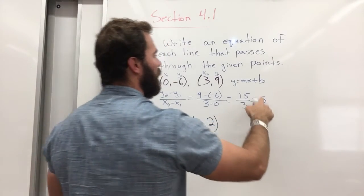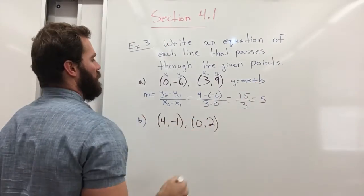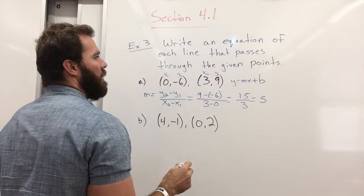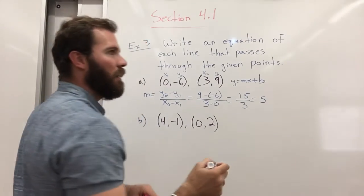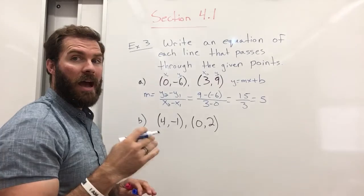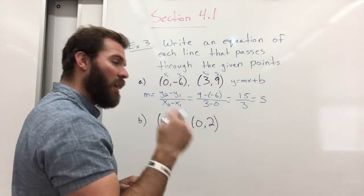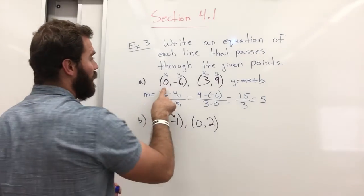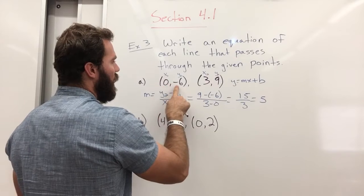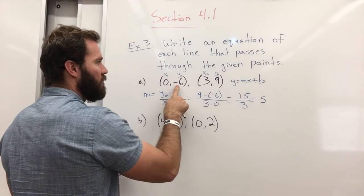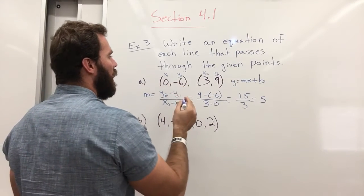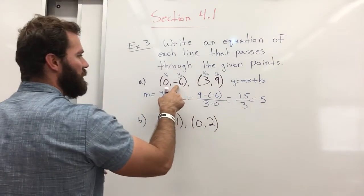Now we just need to find b, our y-intercept. And the y-intercept is where it crosses the y-axis. And where it crosses the y-axis, x is 0. Well here, x is 0, y negative 6. So our b, our y-intercept, is negative 6.